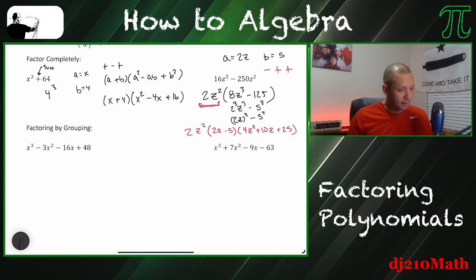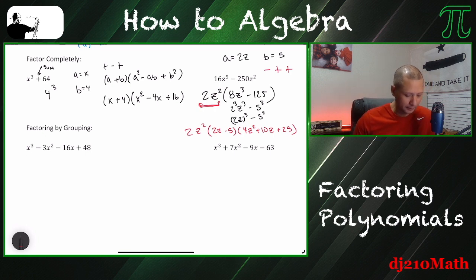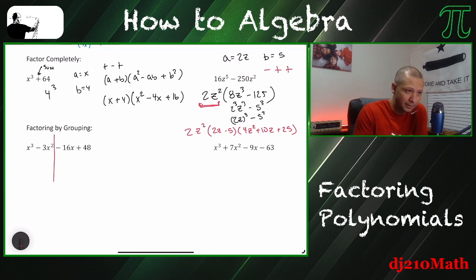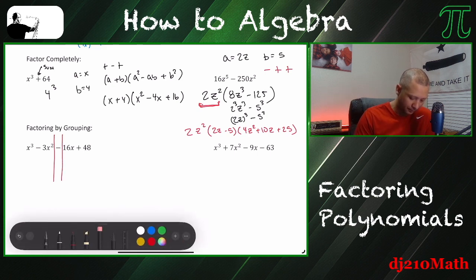Factor by grouping is the most common type of factoring you'll use. It's very useful when you have four or more terms. The idea is to split it down the middle in front of whatever symbol is on the third term.